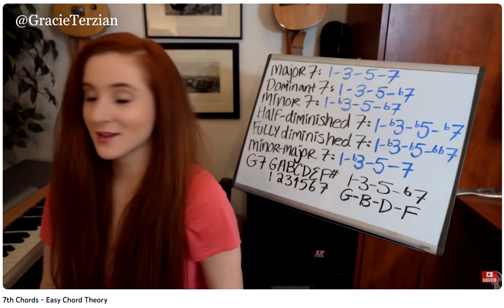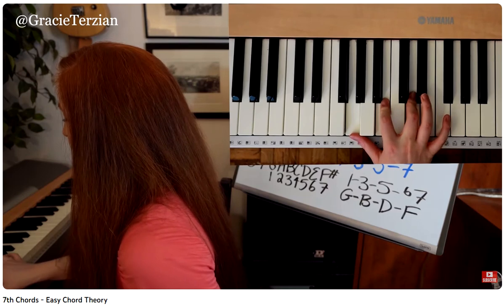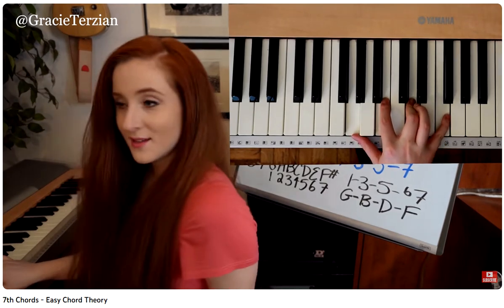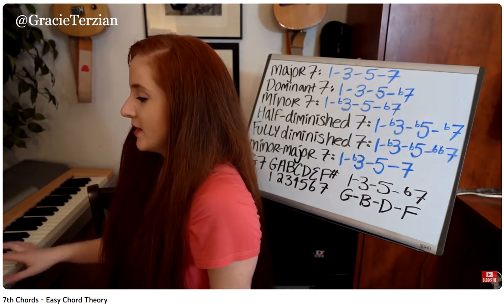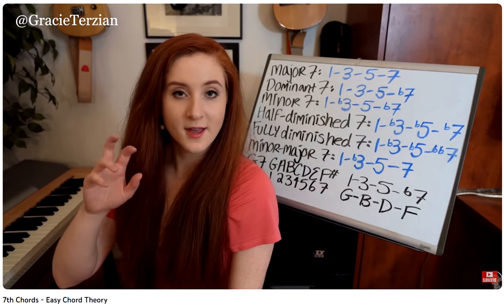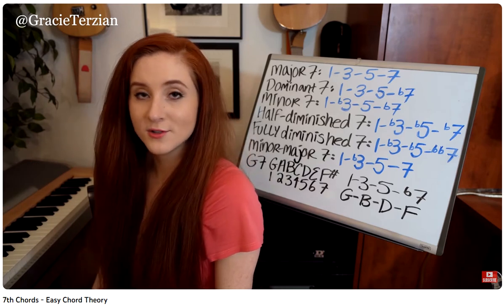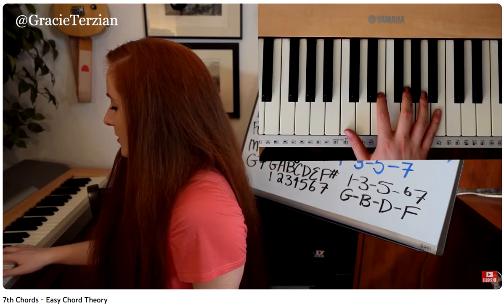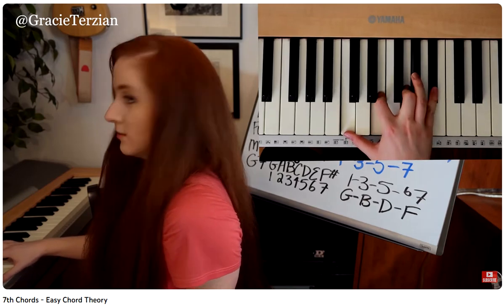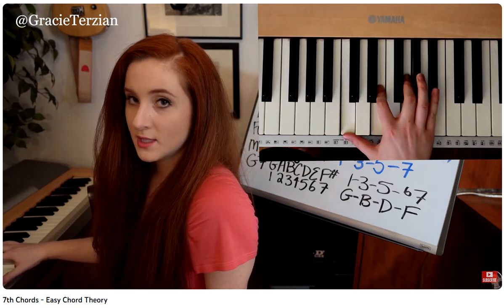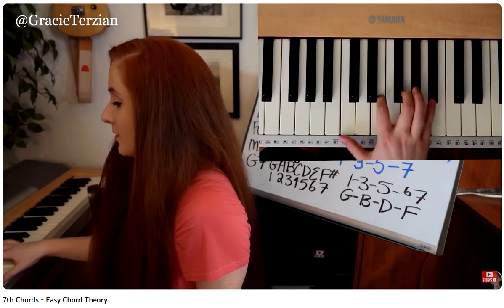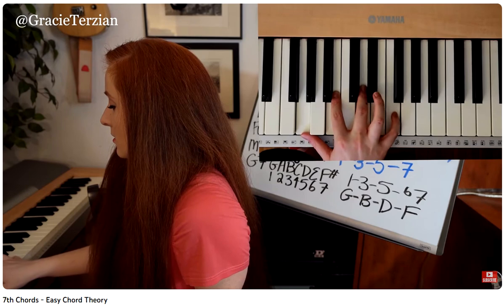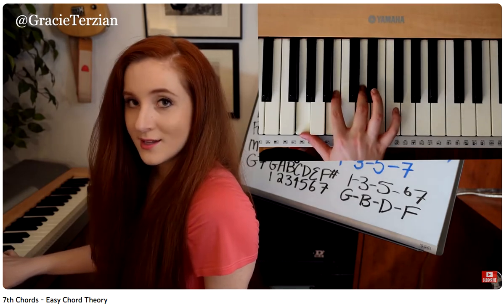Let's listen to what that sounds like: G, B, D, F — dominant 7. You might be able to hear that the dominant 7 chord has a sort of sound to it, just the same way a major 7 chord has a sound. For instance, this was our C dominant 7 chord — dominant 7. And here's our G dominant 7 chord — dominant 7.